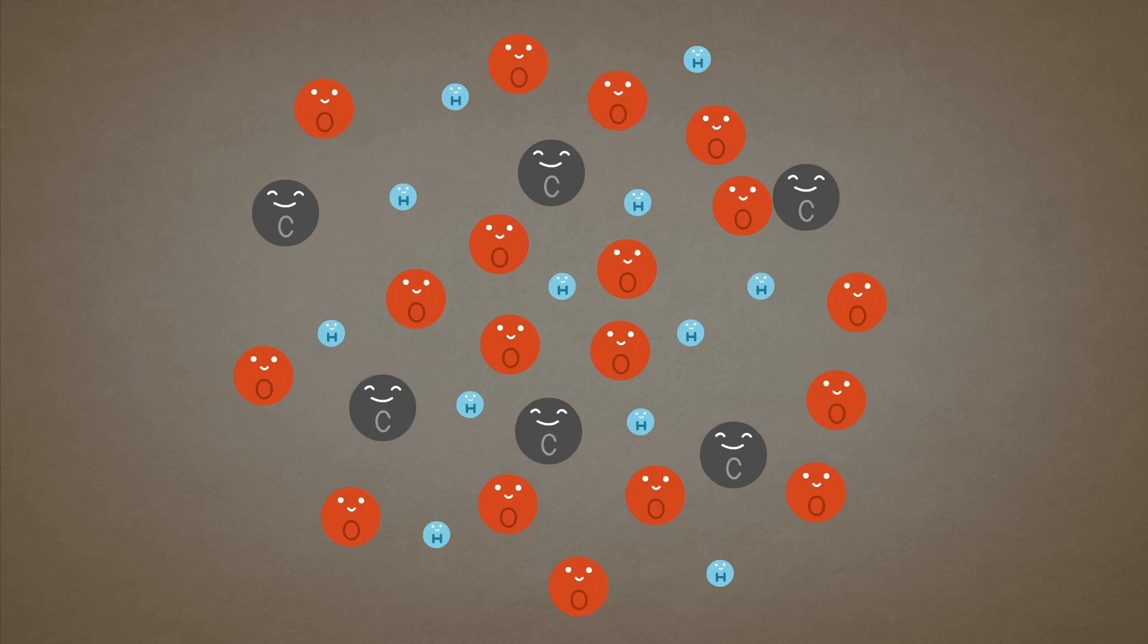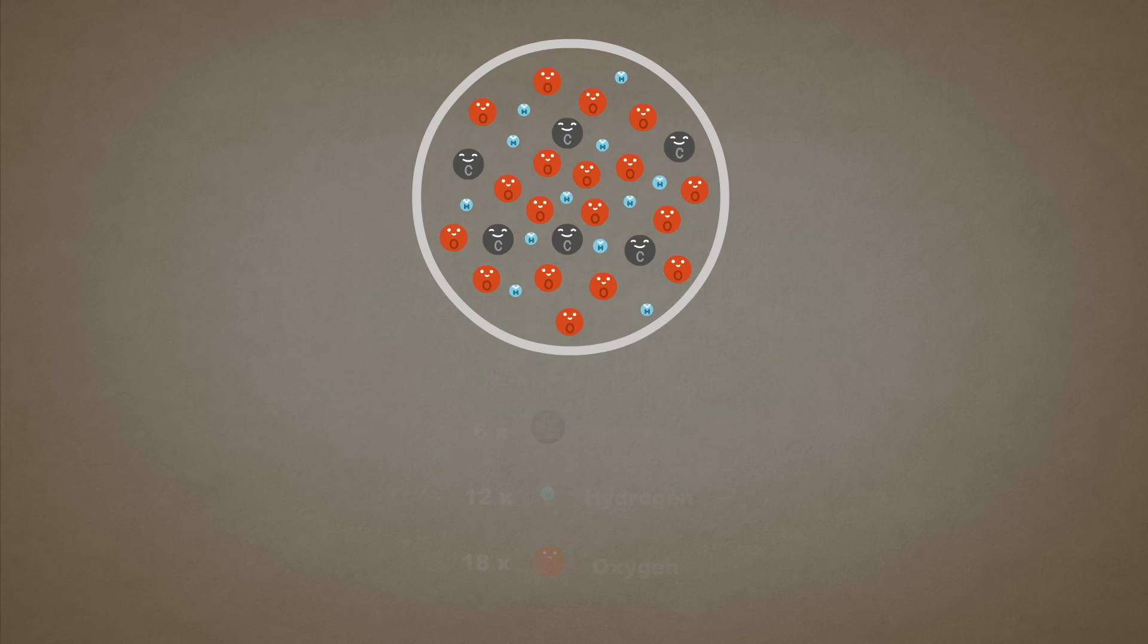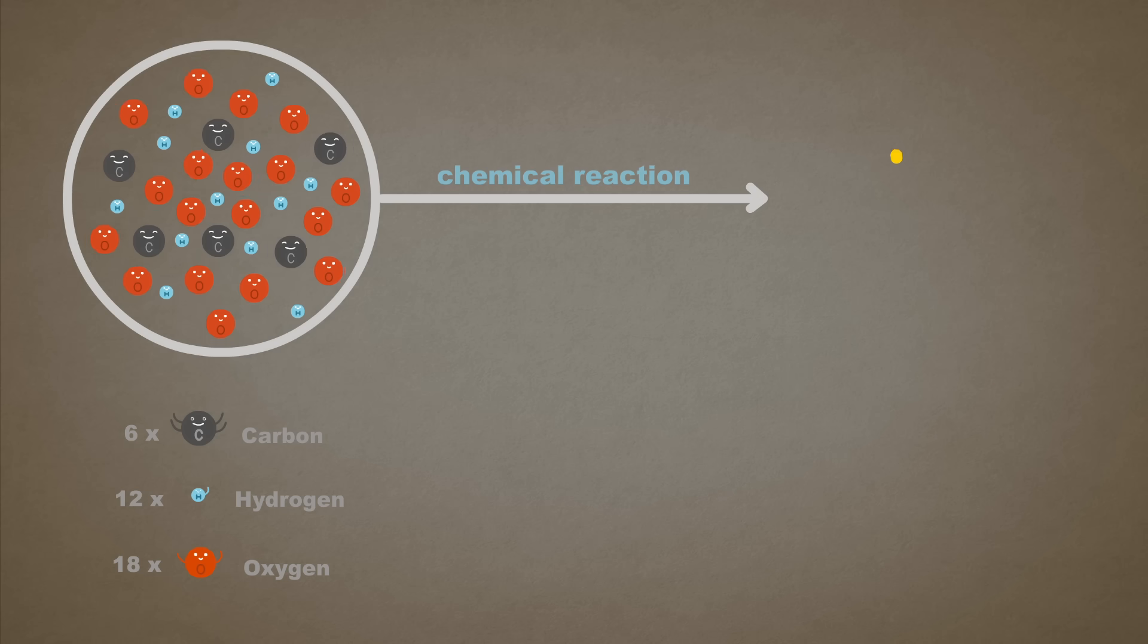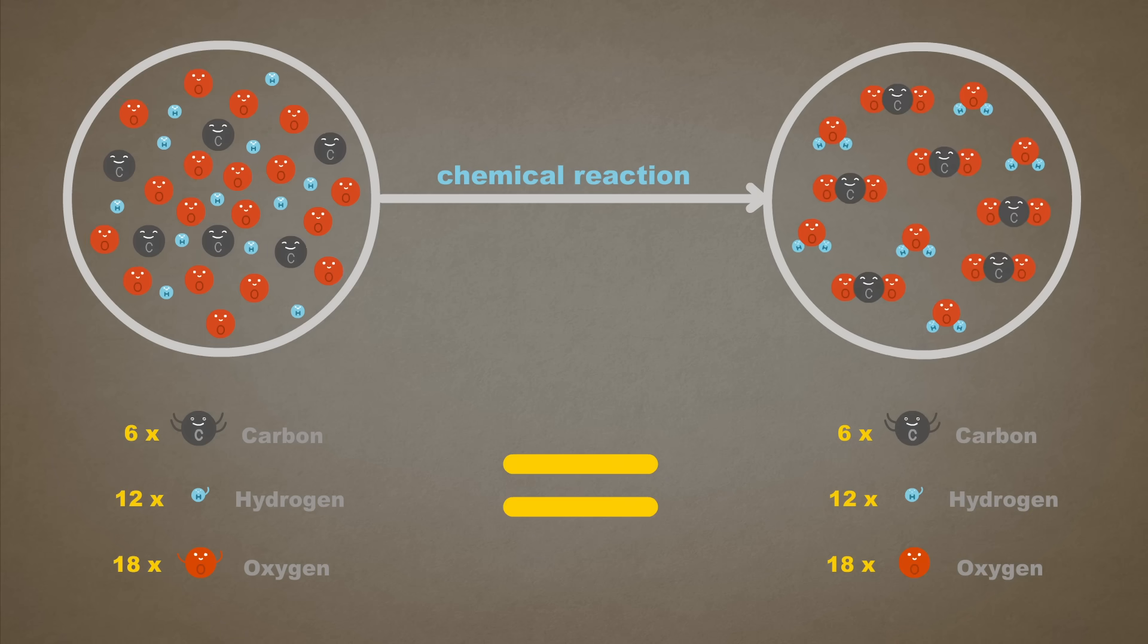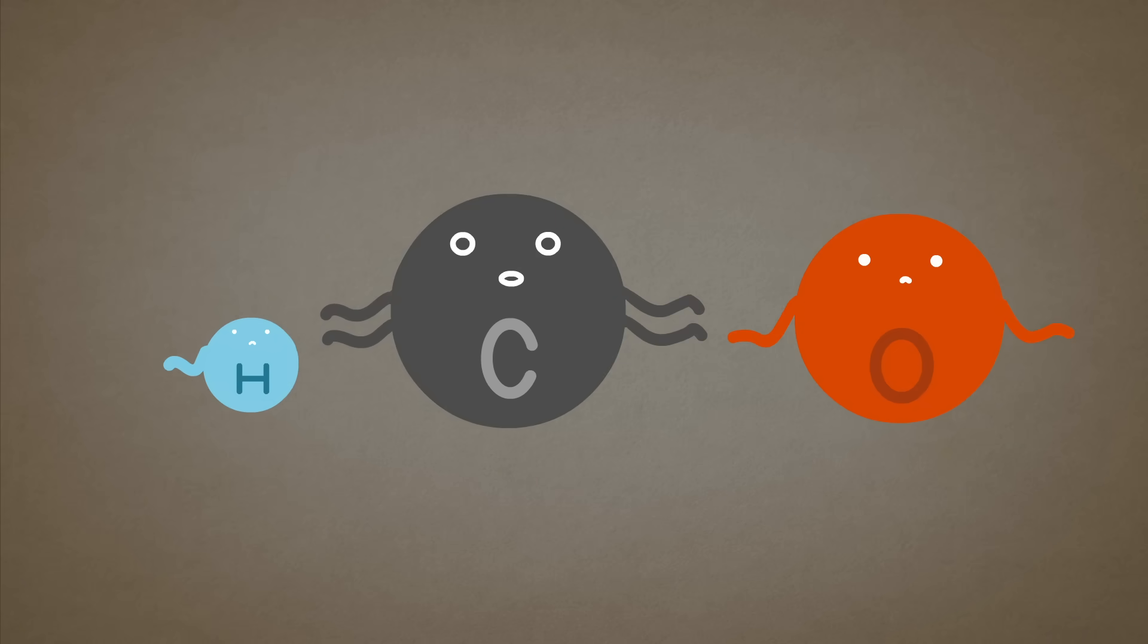There are many other reactions we can model with this small set of atoms, and the law of conservation of mass always holds true. Whatever matter and energy go into a chemical reaction are present and accounted for when it's complete. So if mass can't be created or destroyed, where did these atoms come from in the first place?